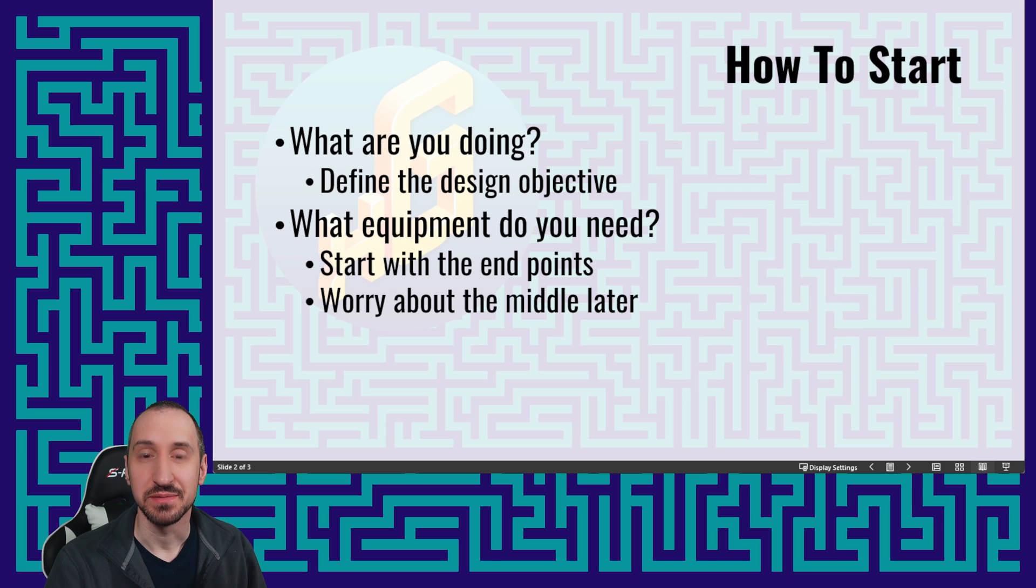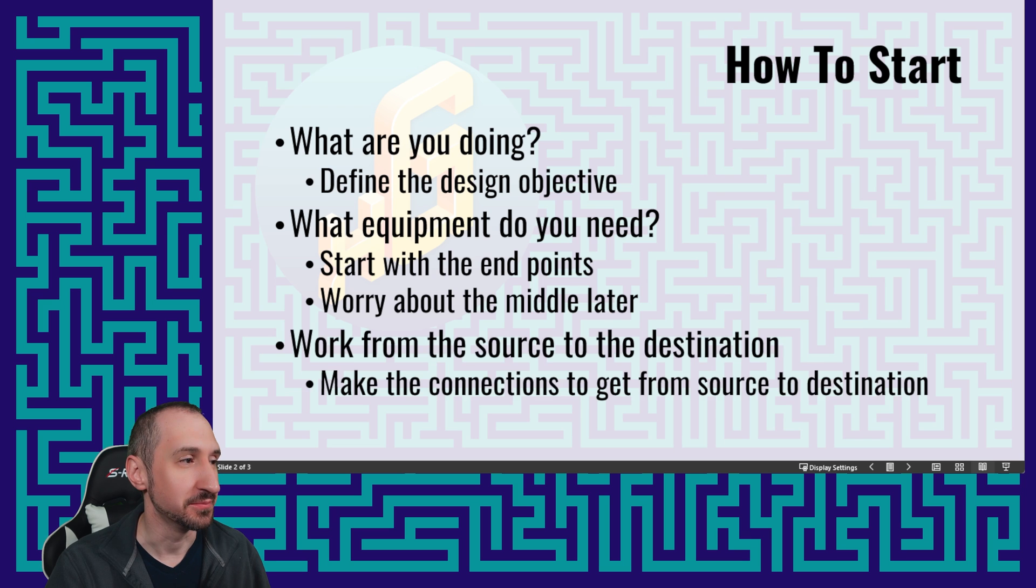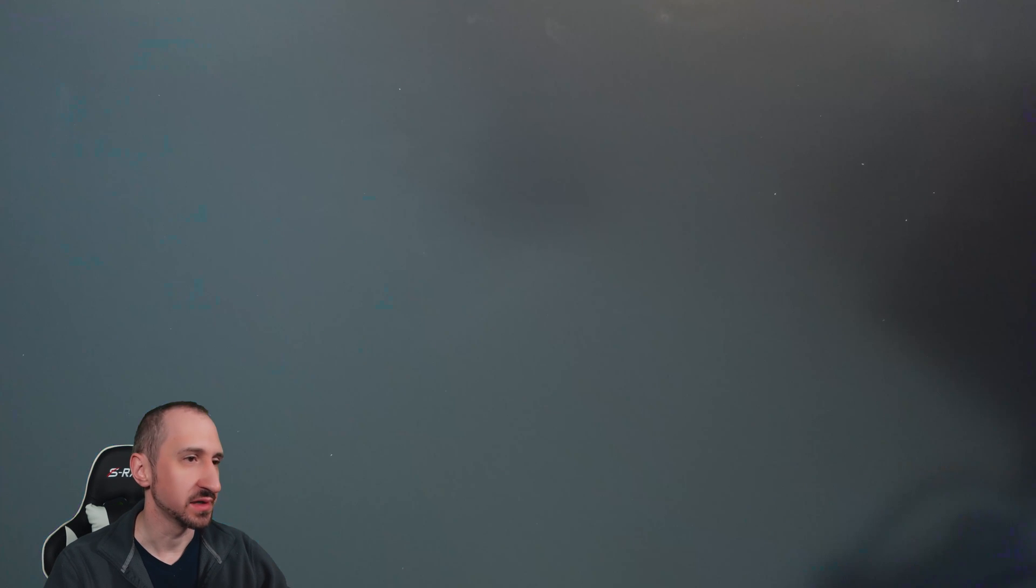Sometimes people try and visualize everything all at the same time, and it just gets really complicated to try and fathom what each piece of equipment is doing. It's best to dive in and look at the smaller portions of the bigger picture and focus on that, then work your way through it, but have an overall concept of what the relationship is in the bigger picture. This creates that bigger picture that helps us determine if there's a problem where it goes wrong. We want to work from the source to the destination and make the connections to get the signal from one end to the other. Let's take a look at that now.